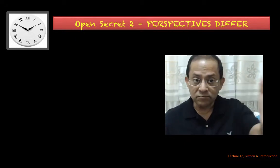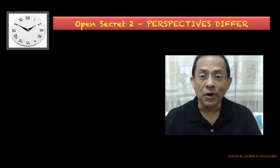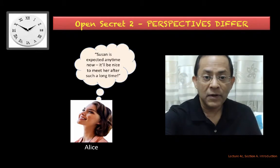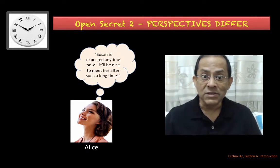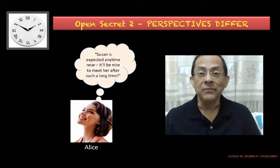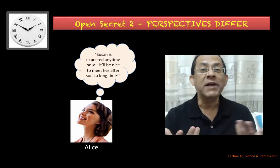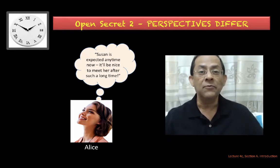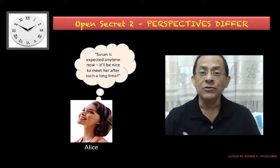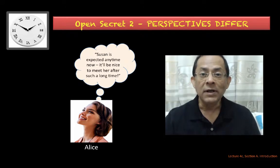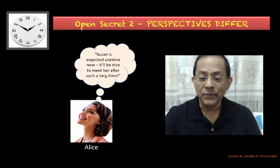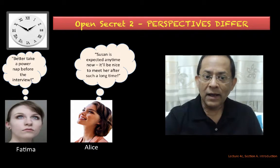If you look at the clock on screen, it is 10 minutes to 2 o'clock. Alice looks at the clock and thinks, 'Susan is expected any time now — it will be nice to meet her after such a long time.' She has an excited, expectant feeling about meeting a long-time friend she hasn't been in touch with.